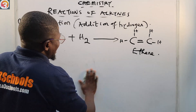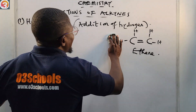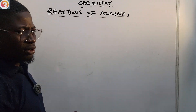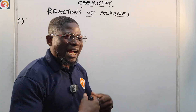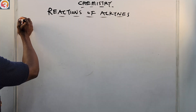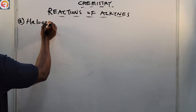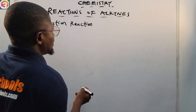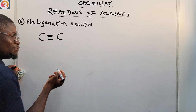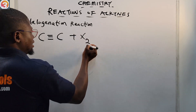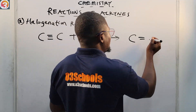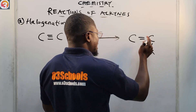The second reaction that alkynes undergo is halogenation — the addition of a halogen. Adding a halogen (X₂) to an alkyne breaks one of the pi bonds. The general reaction shows an alkyne like ethyne reacting with a halogen X₂, giving an alkene with one halogen on each carbon.